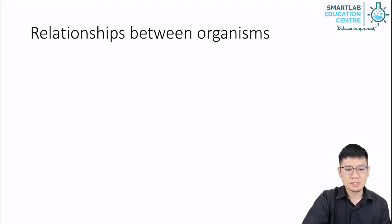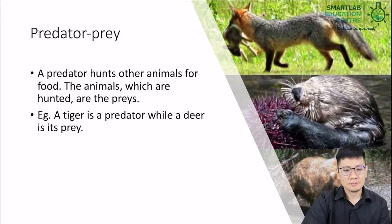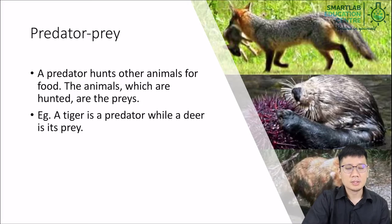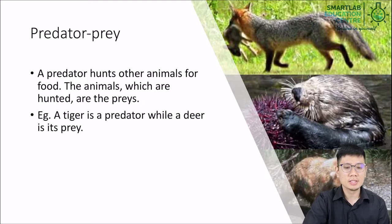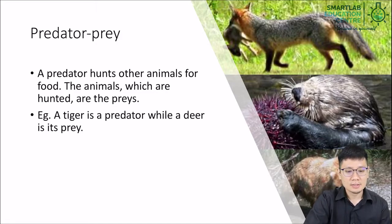Now we're going to discuss some relationships between organisms in terms of the behaviour we can observe. The most simple of these are the predator-prey relationships. In this, a predator hunts other animals for food. The animals which are hunted, we call them prey. For example, a tiger is a predator while a deer is its prey.